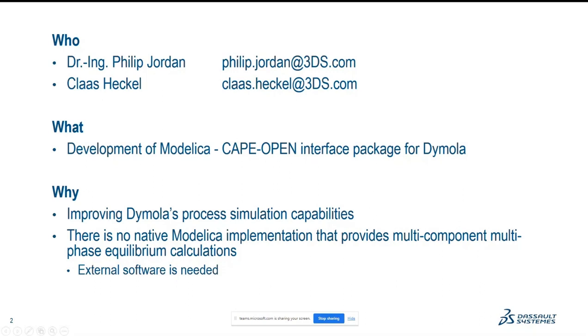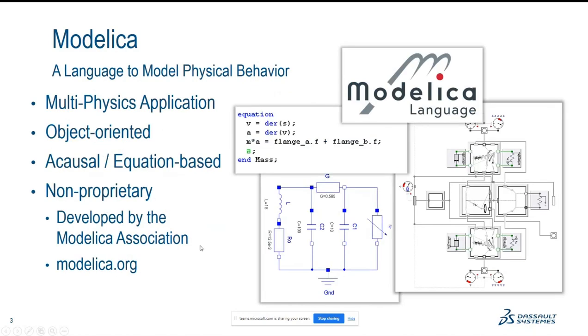But what is Modelica and what is Dymola? And where is the difference? Modelica is a multi-physical modeling language for dynamic simulations. So you can create technical systems of different physical domains and connect them with each other. It's object-oriented, so you can create your components, connect them to systems, and connect the systems to even bigger systems. In that way, you can follow a kind of natural development workflow.